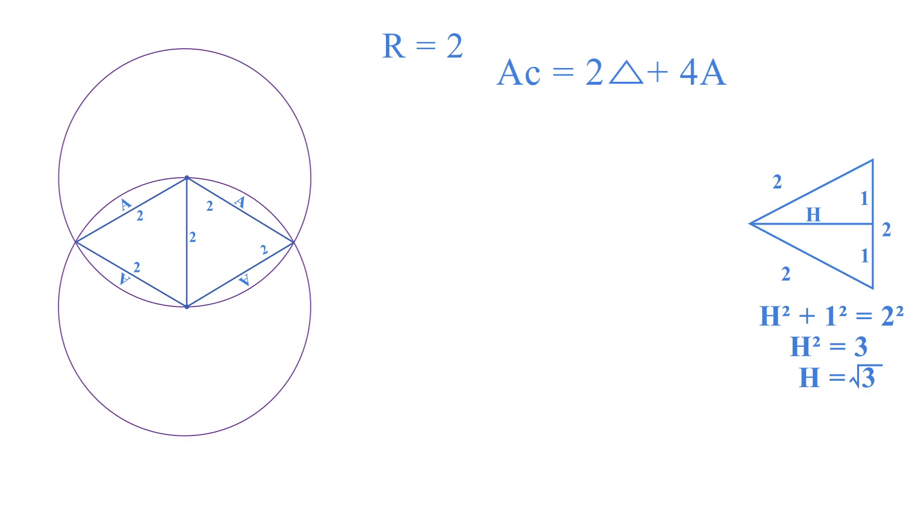So therefore each of these equilateral triangles has an area as follows: one half, base which is 2, times height which we just figured out was √3. And keep in mind that there's two of them, so I'll just multiply by 2.